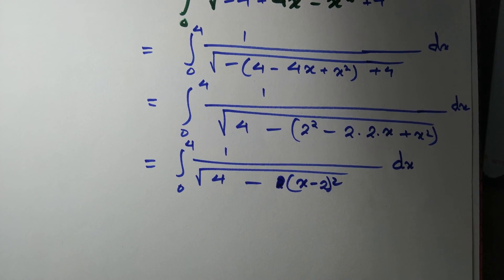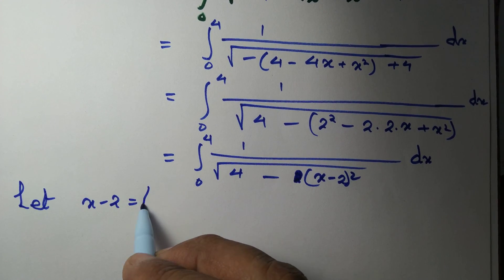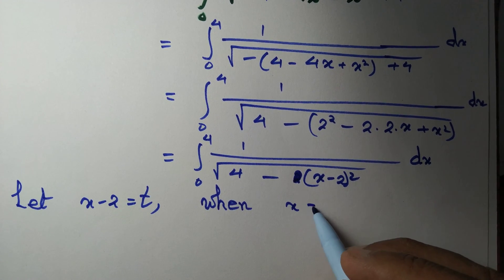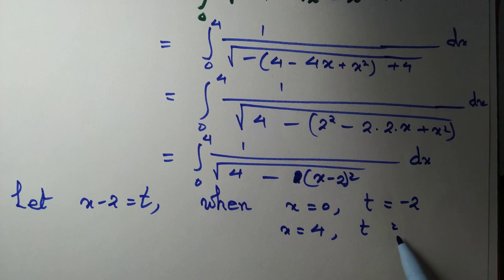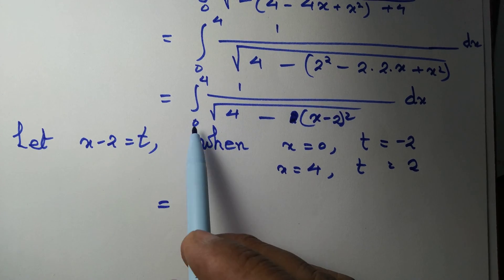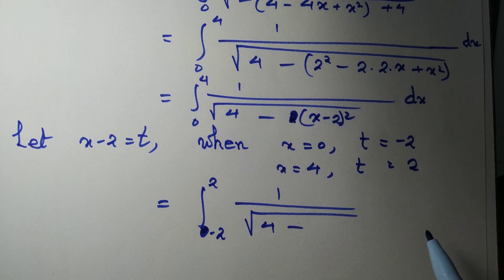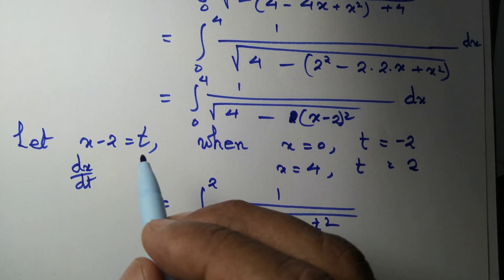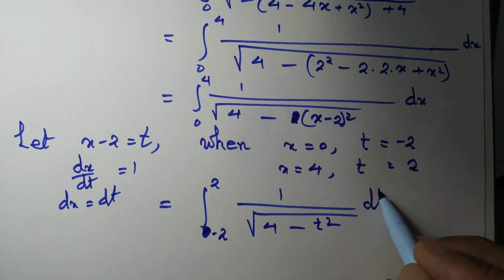Now let x minus 2 equal t. When x equals 0, t equals minus 2, and when x equals 4, t equals 2. So the integral becomes the integral from minus 2 to 2 of 1 over root(4 minus t squared) dt, since differentiating gives dx equal to dt.